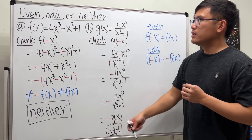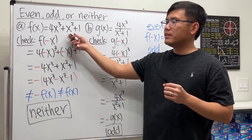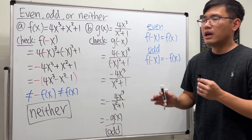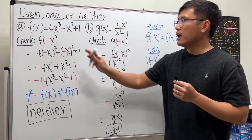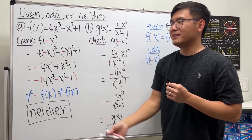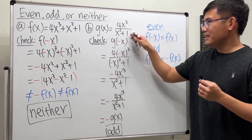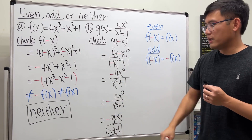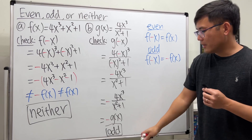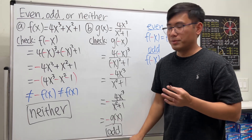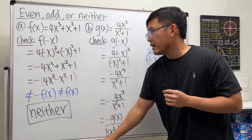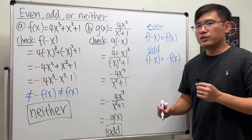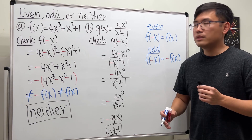You can also grab these functions on your graphing calculator to verify — f is not symmetrical about anything, while g is symmetrical about the origin. That's how to check if a function is even, odd, or neither.